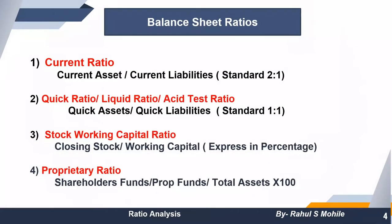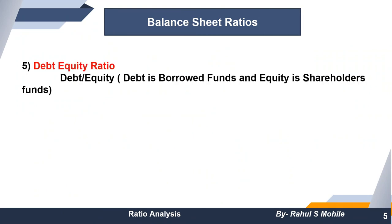To clarify so you don't get confused: in the proprietary ratio, total assets means fixed assets including investments plus current assets — that is what total assets includes. Next is debt equity ratio, which is very important because before investors invest in any company, they check the proportion of debt and equity. If a company already has a lot of debt, it means it will not be able to give returns to shareholders.